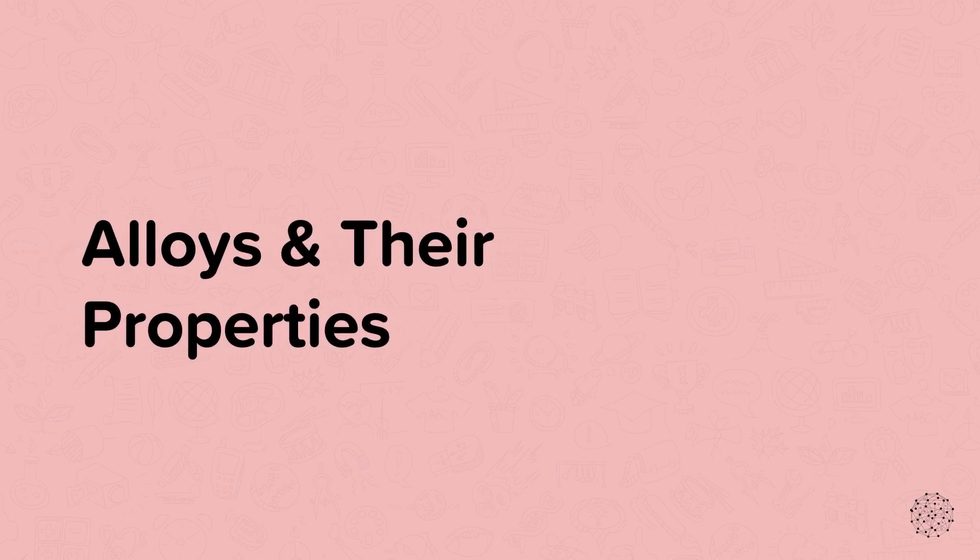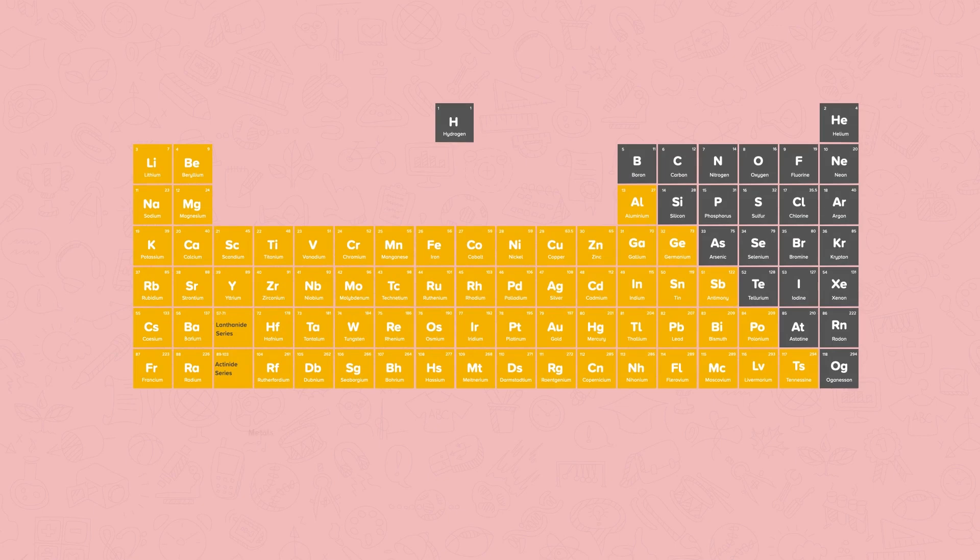In this nugget we are going to learn about alloys and their properties. Metals are found to the left and towards the bottom of the periodic table, highlighted here in yellow.